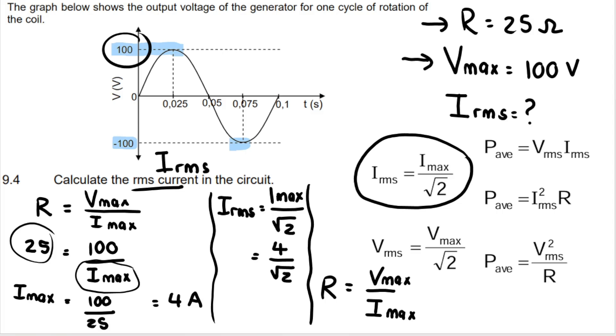And my calculator gives me two root two, which you must write to two decimal places, 2.83, at least two decimal places, 2.83 amperes. My calculator says 2.284, but we round it off. You can to at least two decimal places.